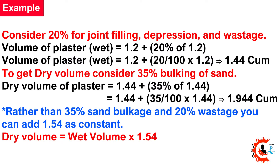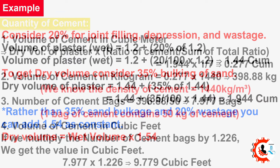To get dry volume, consider 35% bulking of sand. Dry volume of plaster = 1.44 + (35/100 × 1.44) = 1.944 cubic meters. Rather than applying 35% sand bulkage and 20% wastage separately, you can use 1.54 as a constant: Dry volume = Wet volume × 1.54.